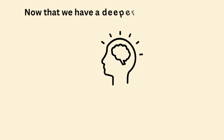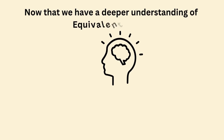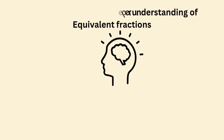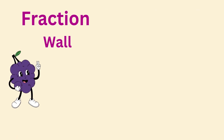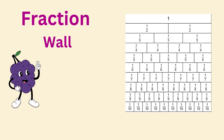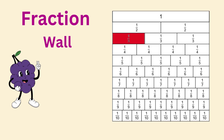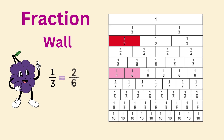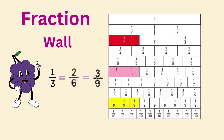Now that we have a deeper understanding of what equivalent fractions are, can you use the fraction wall to assist you in identifying all the equivalent fractions to one-third? Remember, equivalent fractions represent the same value. As you can see on the fraction wall, the equivalent fractions to one-third are two-sixths and three-ninths.